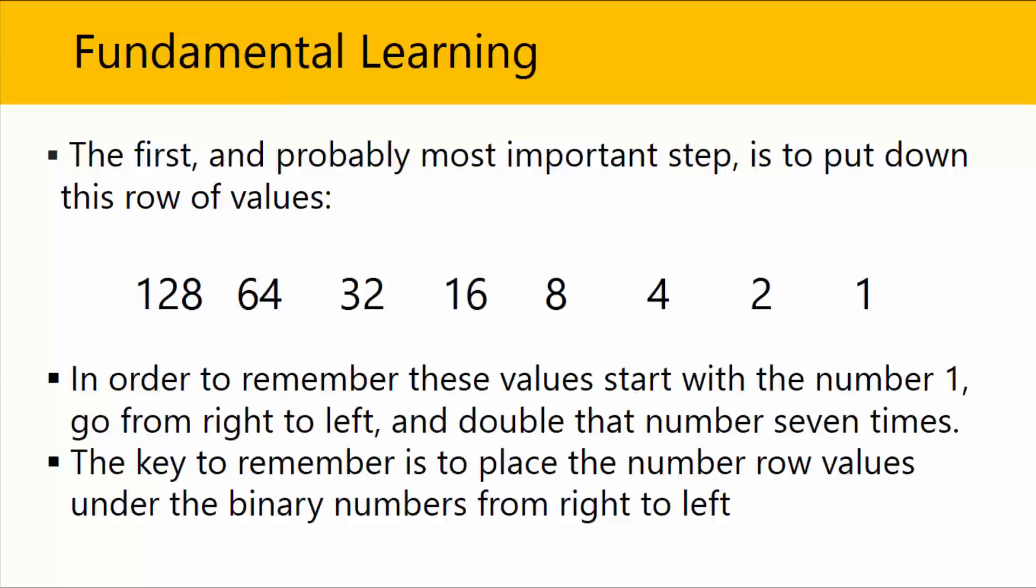So 1 times 2 is 2, 2 times 2 is 4, 4 times 2 is 8, 8 times 2 is 16, 16 times 2 is 32, 32 times 2 is 64, and 64 times 2 is 128. So this is an easy way to remember it.